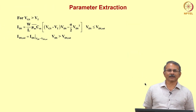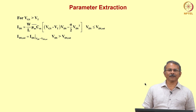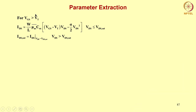Let us illustrate with an example how parameter extraction happens. We will take up the commonly used square law current-voltage model for above-threshold characteristics. The parameters that need to be extracted to predict the current-voltage characteristics in the super-threshold region are: the threshold voltage Vt, the values of W and L, the mobility parameters, and the oxide capacitance Cox.